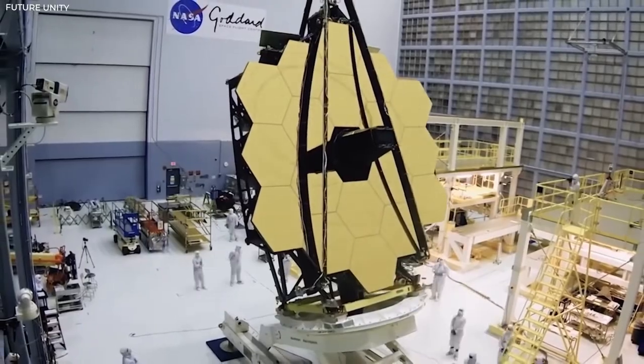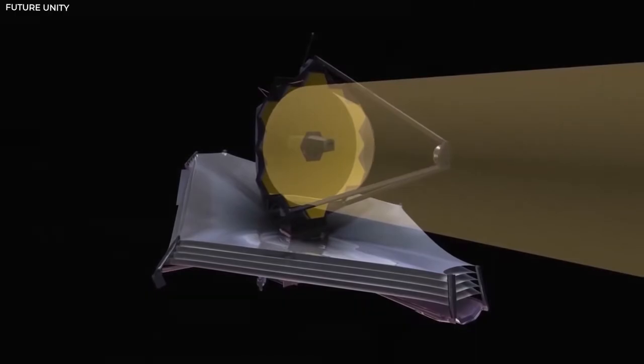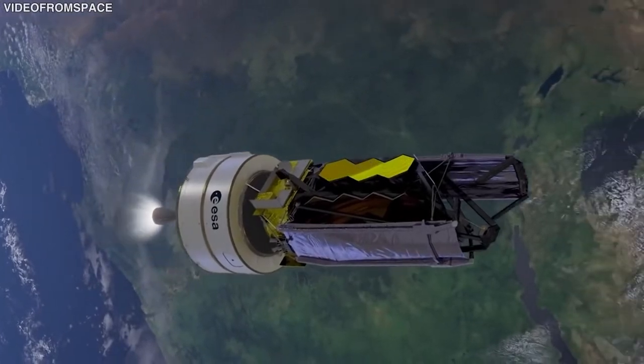Near-Infrared Camera, Fine Guidance Sensor and Near-Infrared Imager and Slitless Spectrograph, Mid-Infrared Instrument, and Near-Infrared Spectrograph are the four major instruments on JWST.